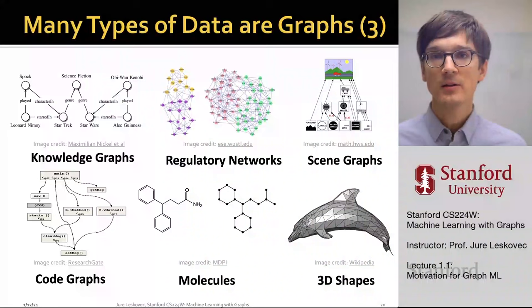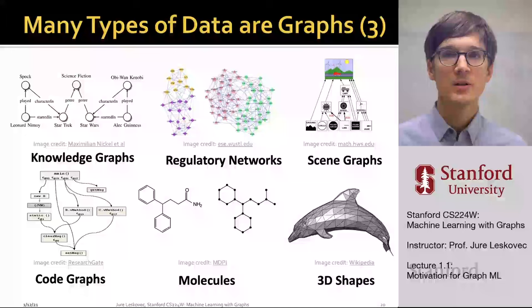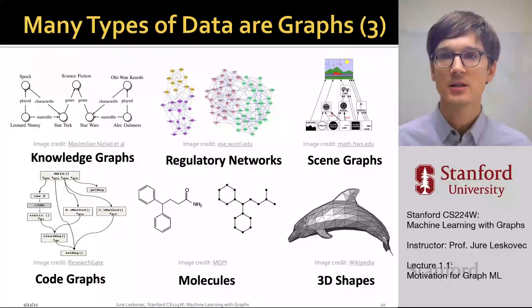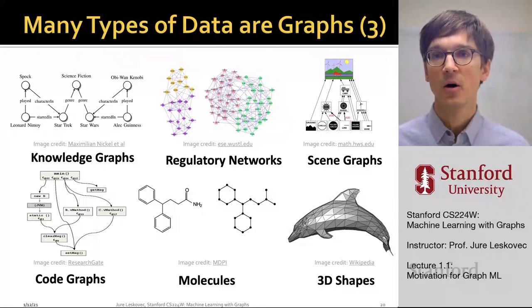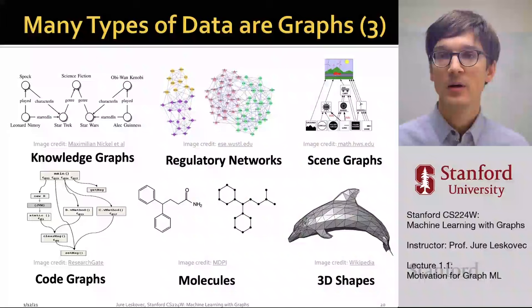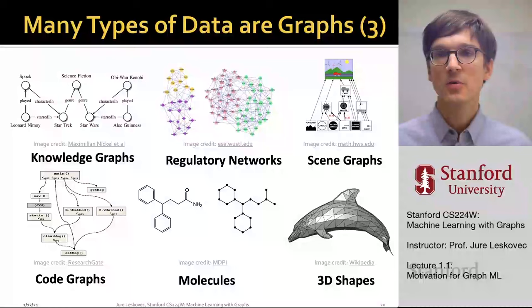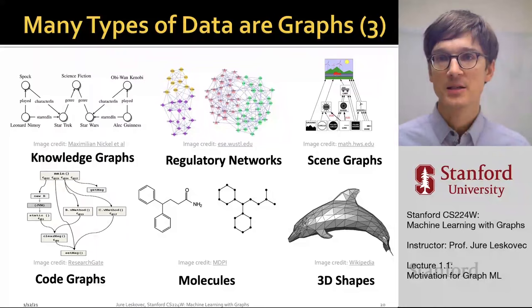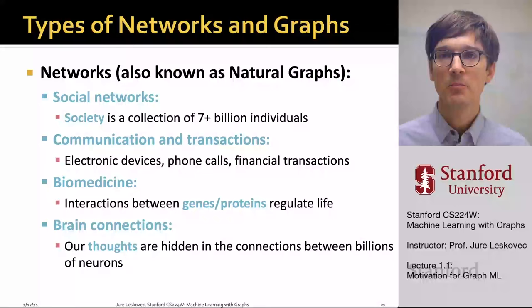We can take computer code and represent it as a graph of calls between different functions, or as a structure of code captured by the abstract syntax tree. We can also naturally take molecules, which are composed of atoms and bonds, and represent them as graphs where atoms are nodes and bonds are edges between them. And in computer graphics, we can take three-dimensional shapes and represent them as graphs. In all these domains, graphical structure is the important part that allows us to model the underlying domain faithfully.